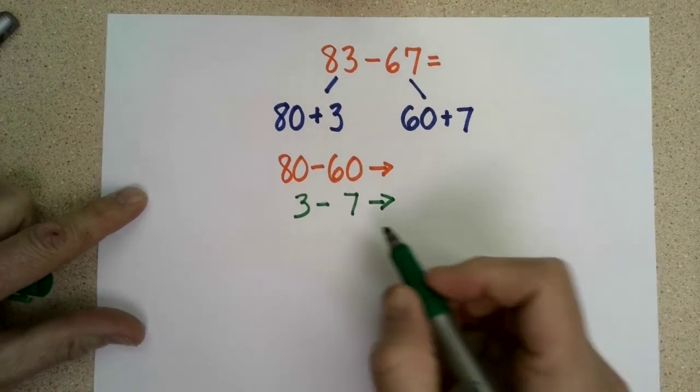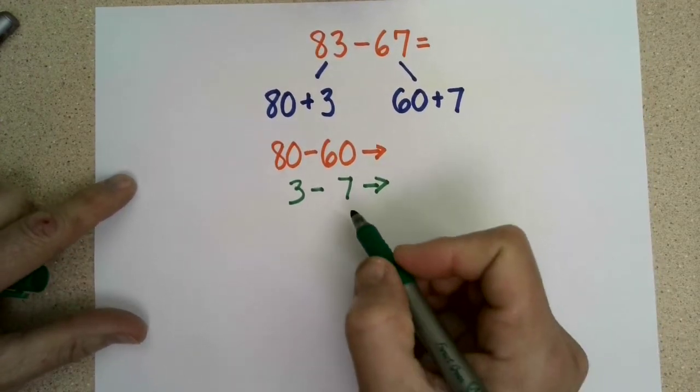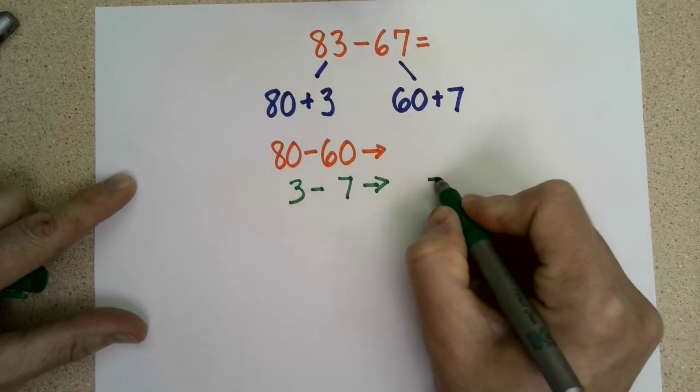Now, normally we think you can't. If you have 3, you can't take 7 away. However, is it possible that we could have 3, take 7 away, and end up with a number that's negative?